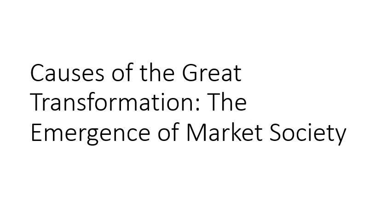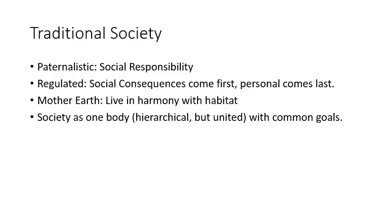When markets became dominant, then economic theory — the theory of market society — also became dominant. To understand the differences, we start with the pre-market society. What was society like before markets became so powerful? In a traditional society it is paternalistic: the rich and the powerful take care of the poor and the weak — that's called social responsibility. It is regulated; you can't do whatever you like. Everyone is bound to obey social welfare.